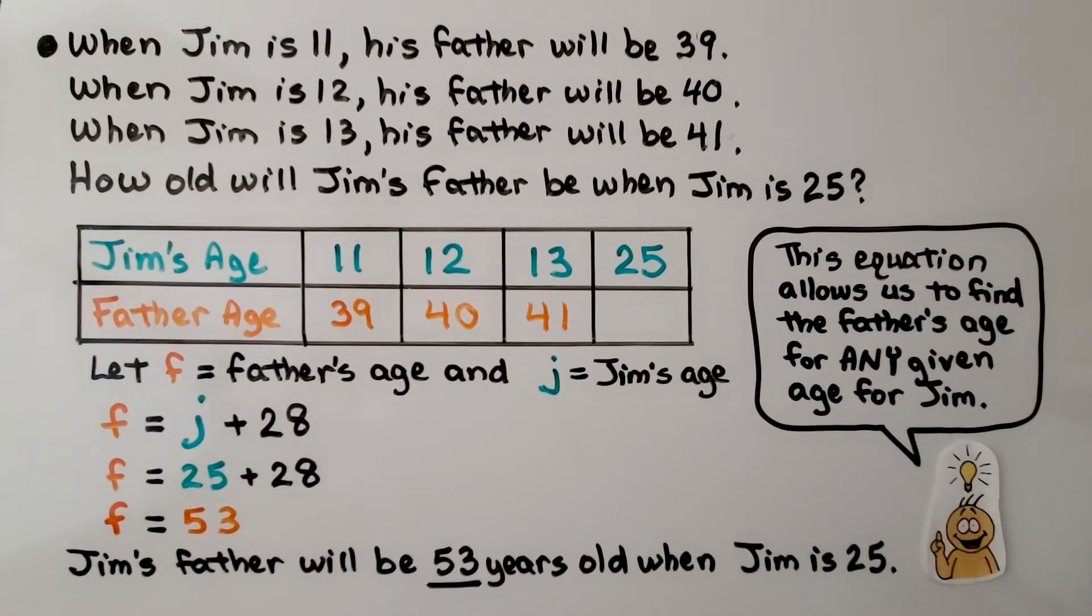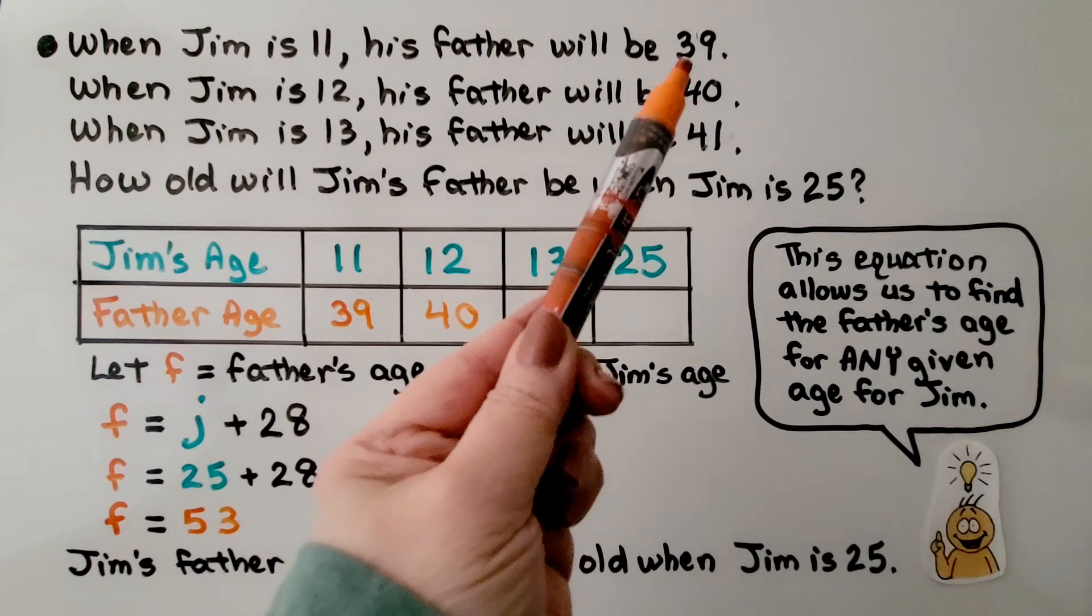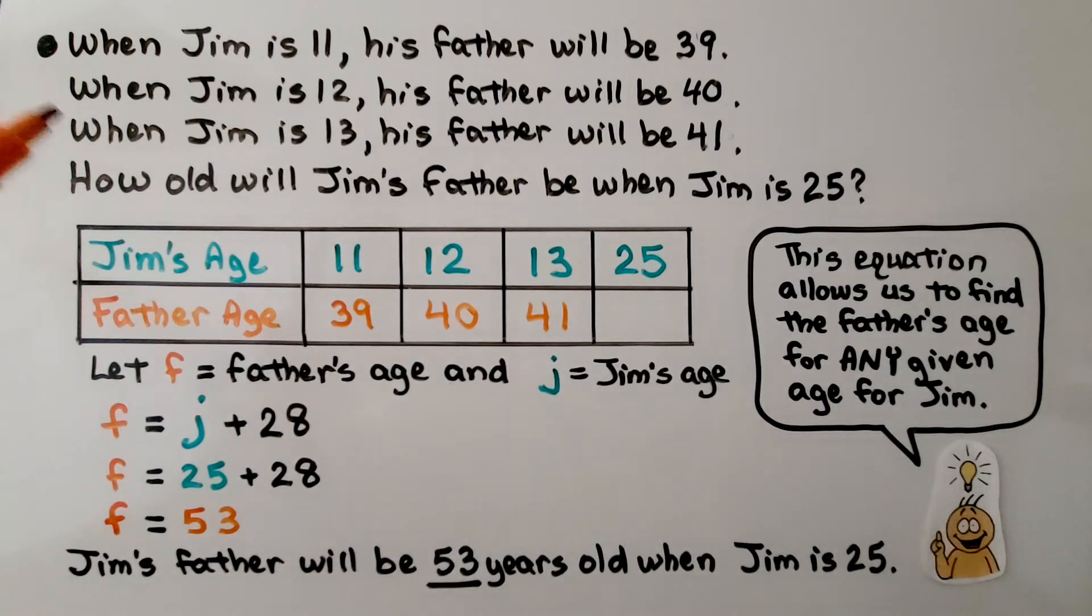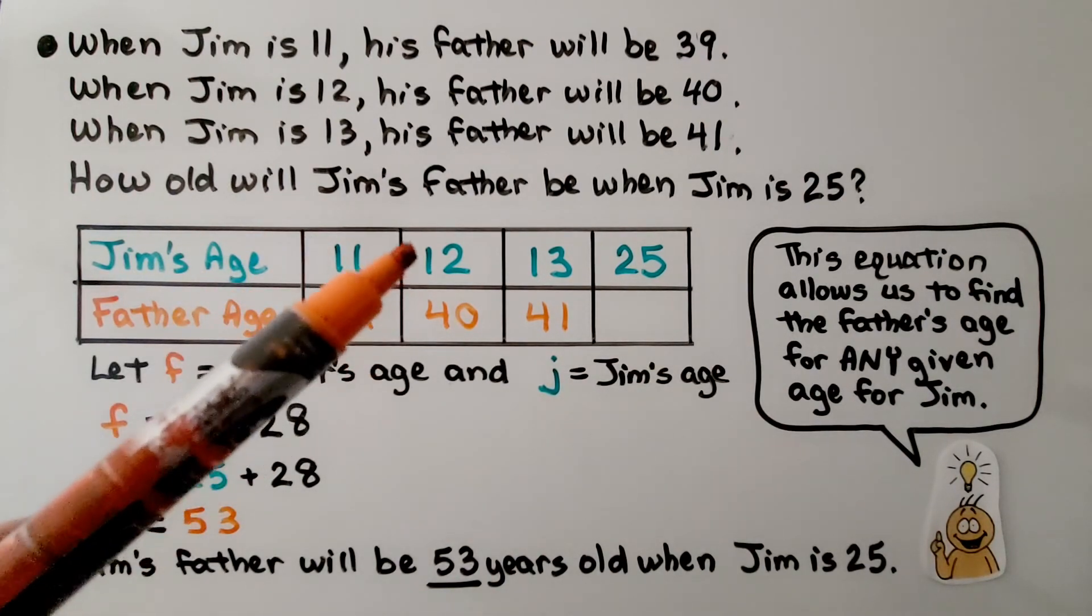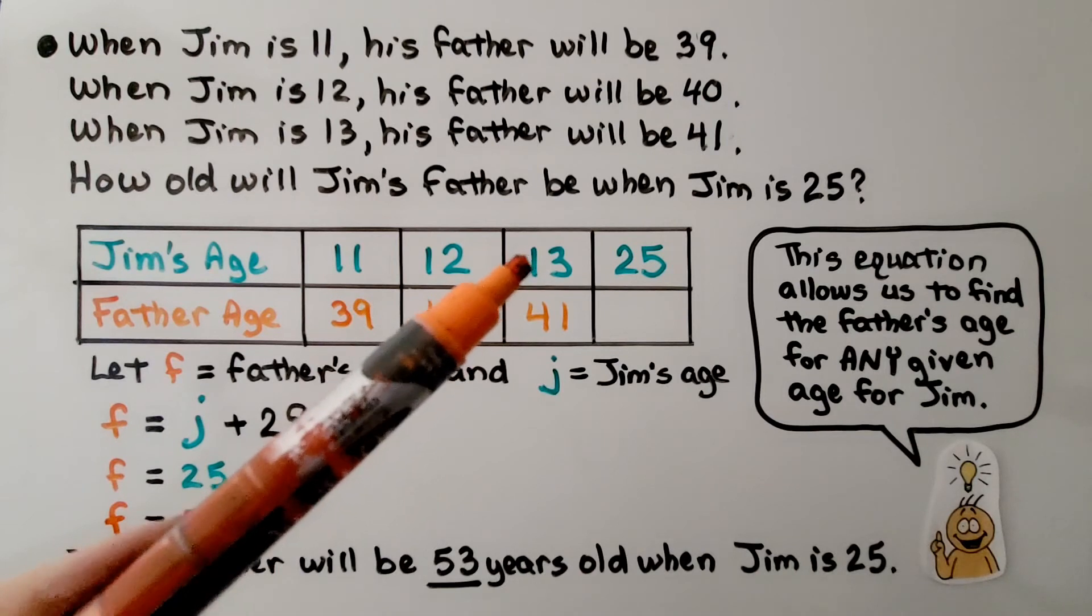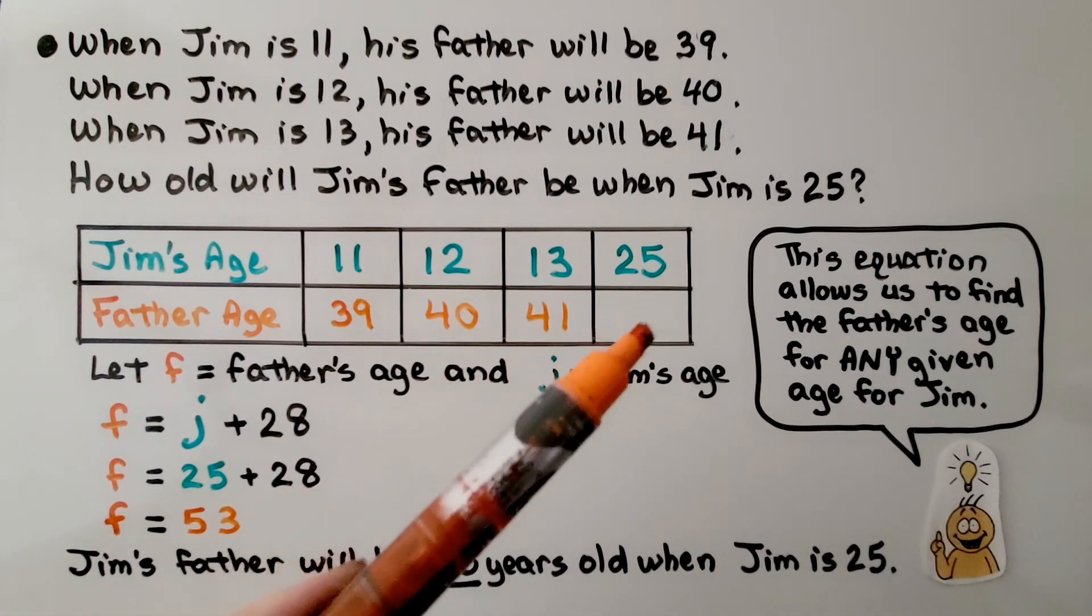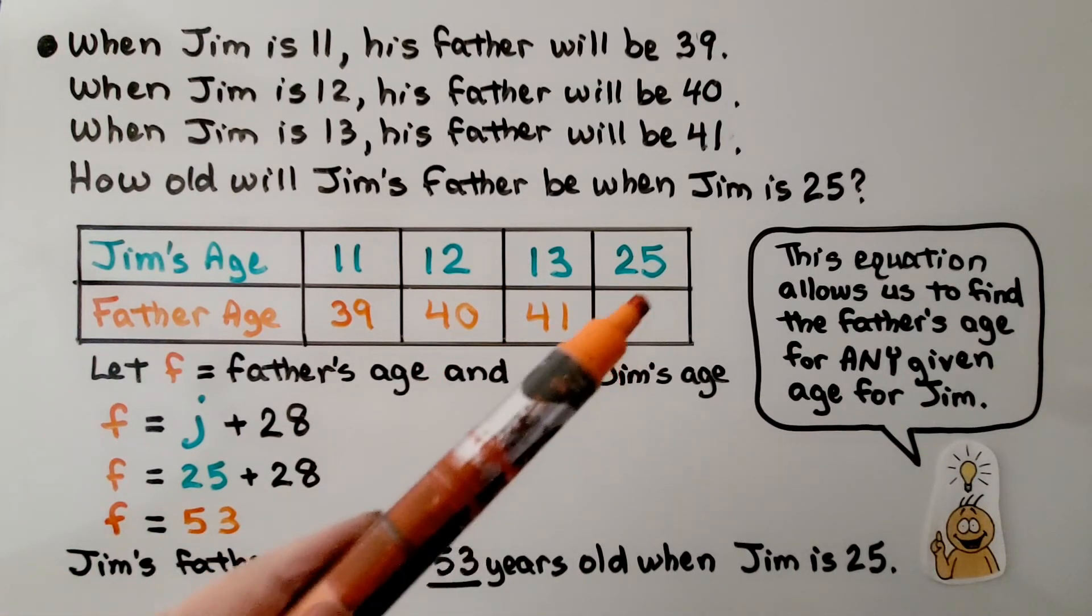Now let's try another quick one. When Jim is 11, his father will be 39. When Jim is 12, his father will be 40. When he's 13, his father will be 41. How old will Jim's father be when Jim is 25? We can make a table of the values. Here he's 11, his father's 39. He's 12, the father's 40. He's 13, the father's 41. We need to find the father's age when Jim is 25.